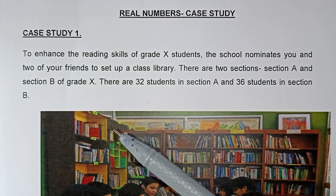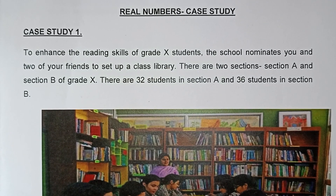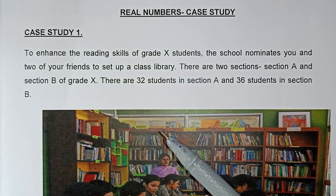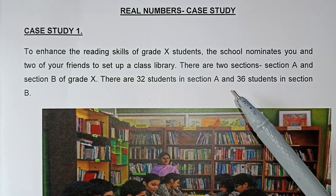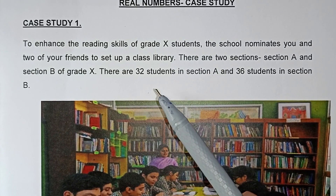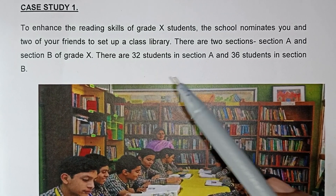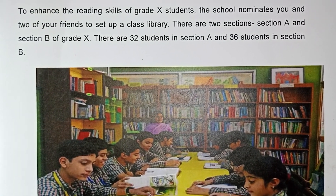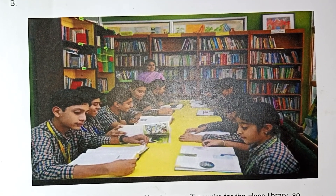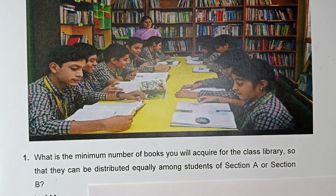To enhance the reading skill of grade 10 students, the school nominates you and two of your friends to set up a class library. There are two sections, A and section B of grade 10. There are 32 students in section A and 36 students in section B.